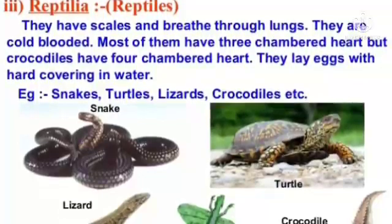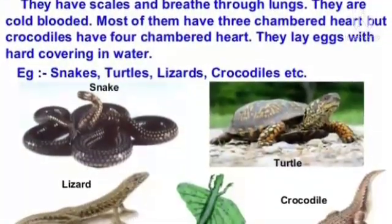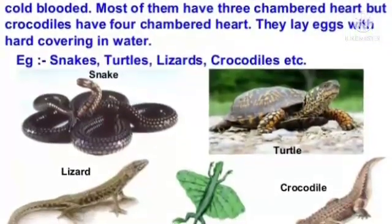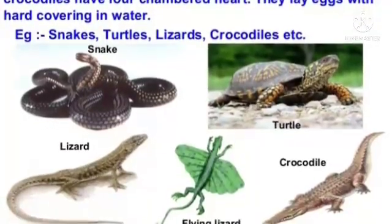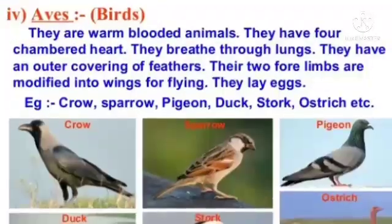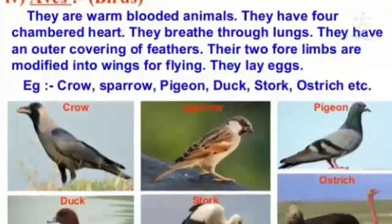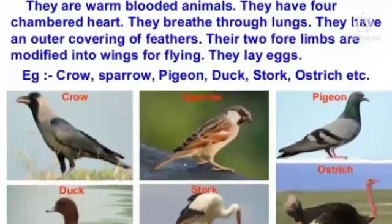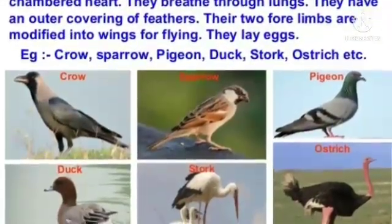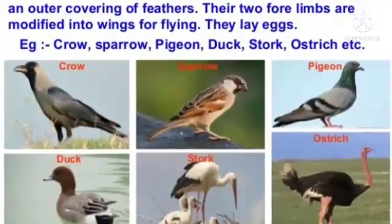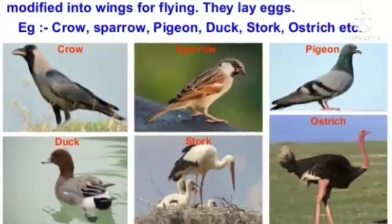Reptilia: they have scales and breathe through lungs. They are cold-blooded. Most have a three-chambered heart, but crocodiles have a four-chambered heart. They lay eggs with a hard covering. Examples: snakes, turtles, lizards, crocodiles, etc. Aves: they are warm-blooded animals with a four-chambered heart. They breathe through lungs and have an outer covering of feathers. Their two forelimbs are modified into wings for flying. They lay eggs. Examples: crow, sparrow, pigeon, duck, stork, ostrich, etc.